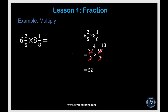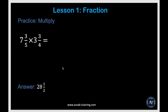Here is another multiplication example — same approach: convert the mixed number to an improper fraction, then multiply top to top and bottom to bottom, or simplify by dividing first, to get 52. There are a couple of practice problems — try them yourself and make sure you get the correct answers.